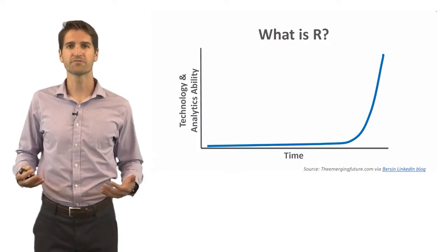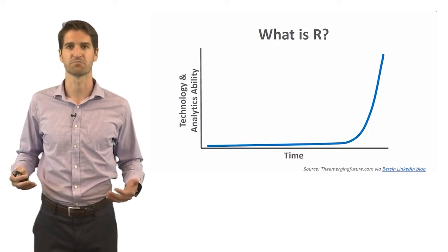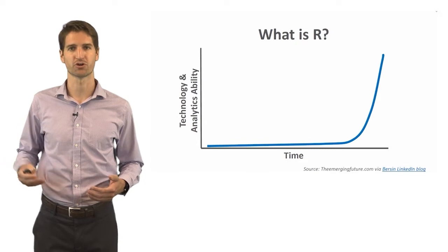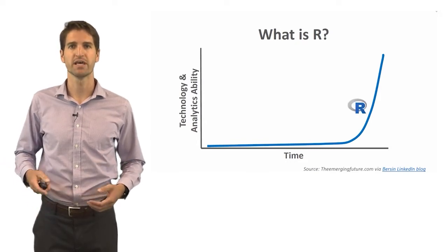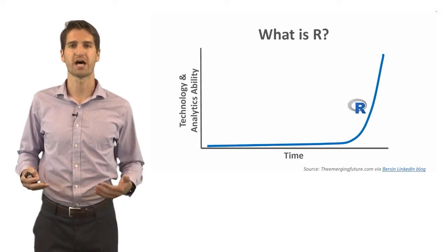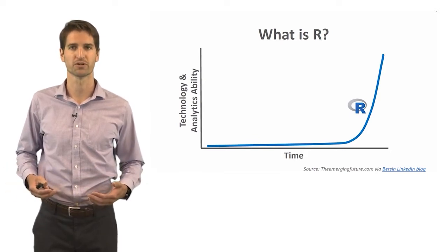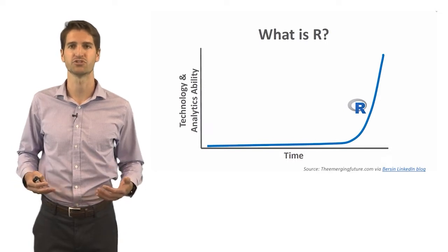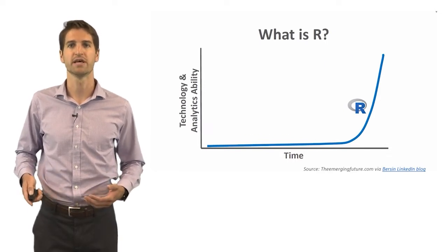As part of the technological revolution, we've seen this really rapid growth in our technology and analytics abilities. We've seen what's referred to as the elbow starting to occur right now, where we're seeing this exponential growth. And R is just one of those platforms that's really catapulted the field of analytics forward, based on the amount of different types of analyses and visualizations you can do using the statistical programming language.